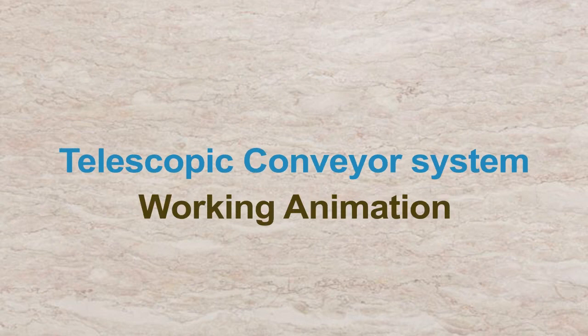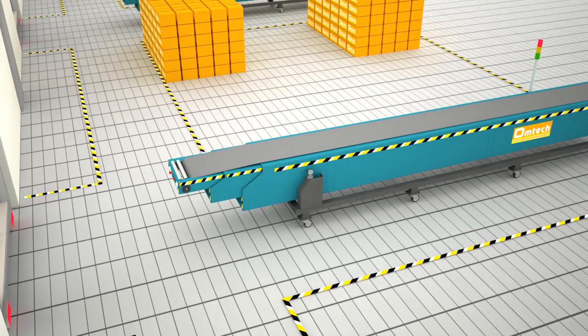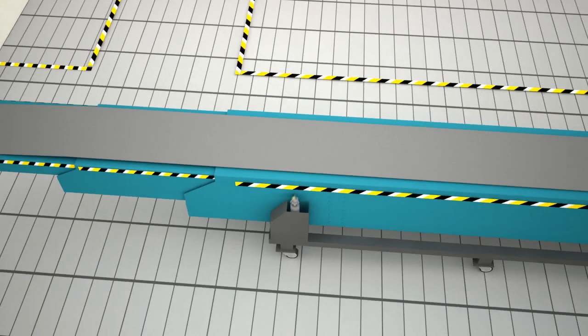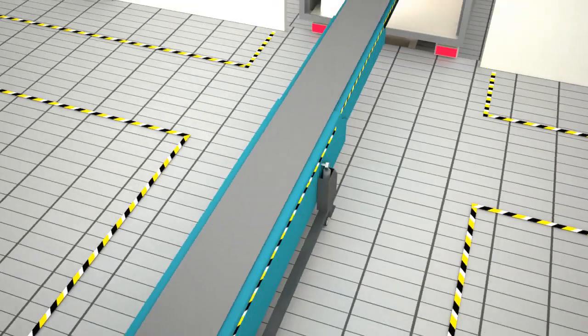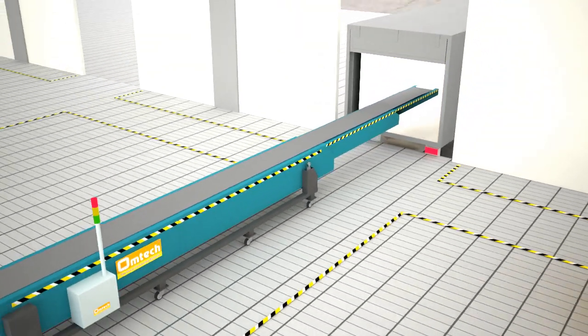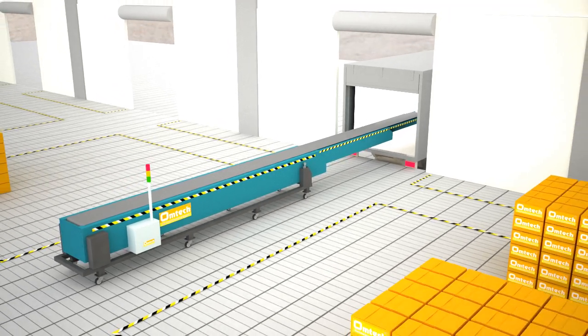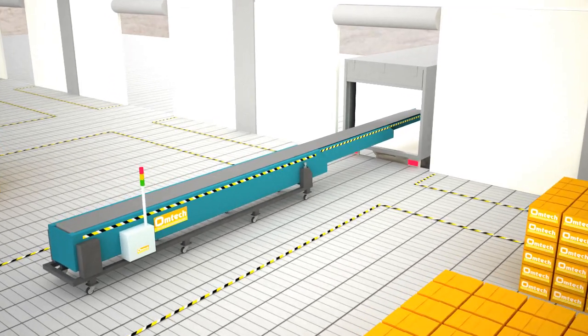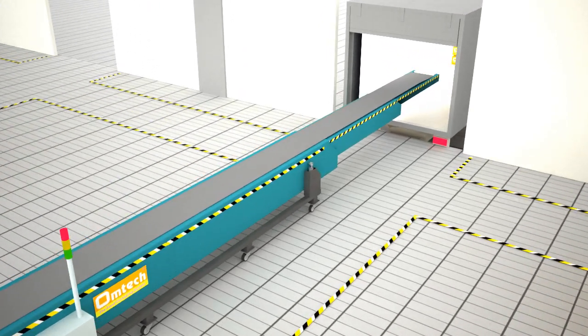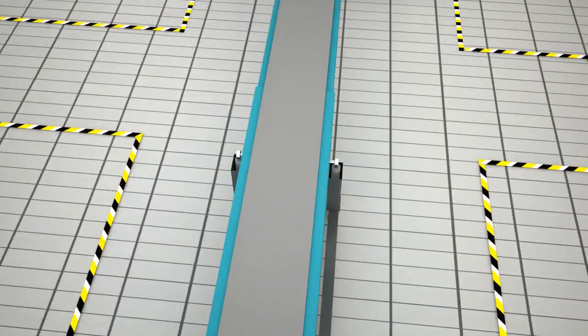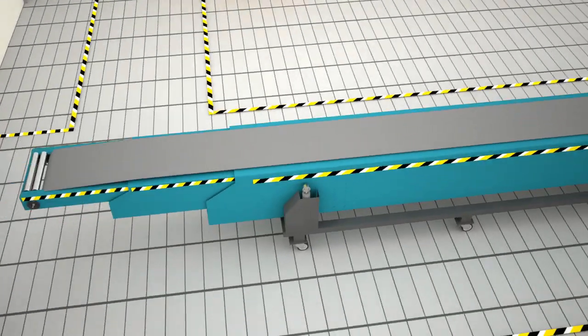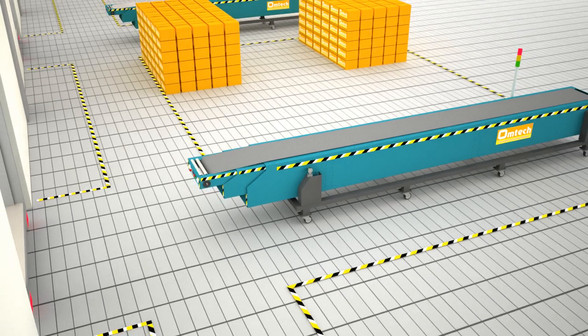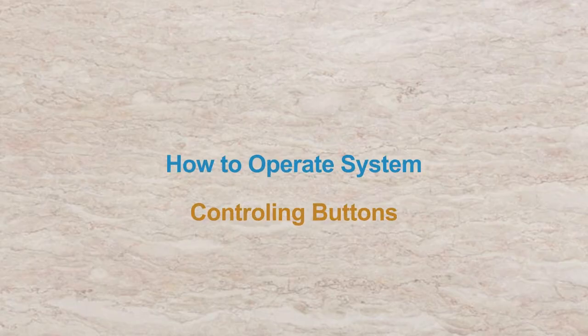Telescopic conveyor system working animation. Best quality telescopic conveyor system manufacturing by Omtek Food Engineering, Rajkot. Omtek manufactures a widest range of conveyor systems. We are focused on quality and durability of the system. Let's understand the controlling buttons.